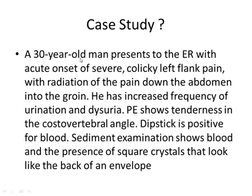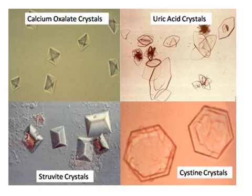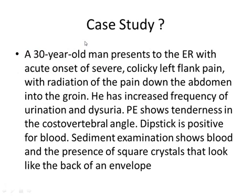Case scenario: A 30-year-old male presents to the emergency room with acute onset of severe colicky left flank pain with radiation down to the groin, increased urinary frequency, and dysuria. Physical examination shows tenderness in the costovertebral angle. Dipstick is positive for blood. Diagnosis: nephrolithiasis.